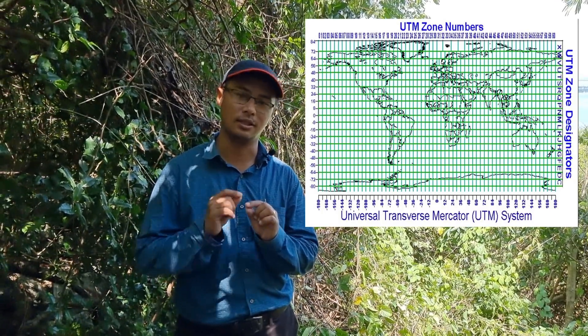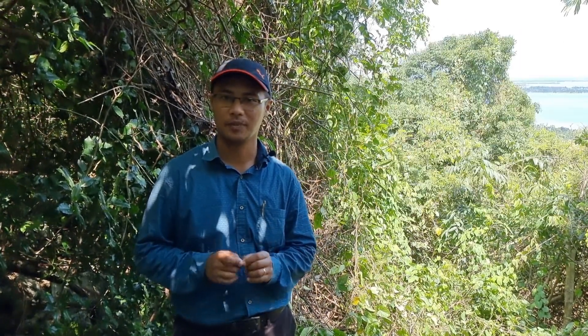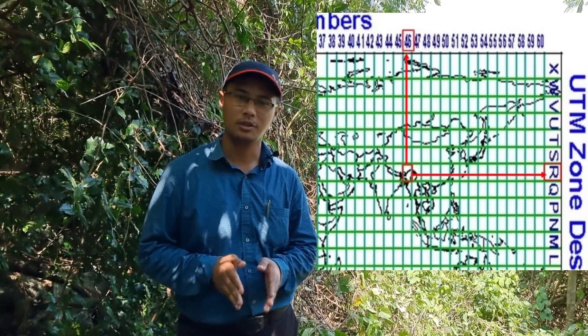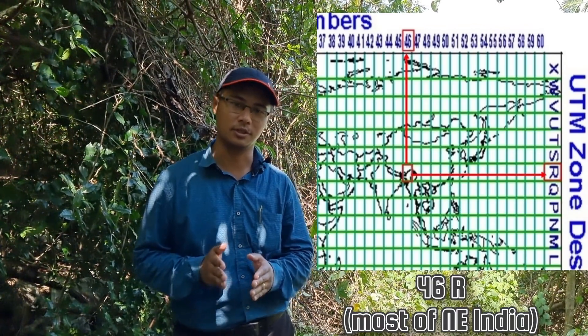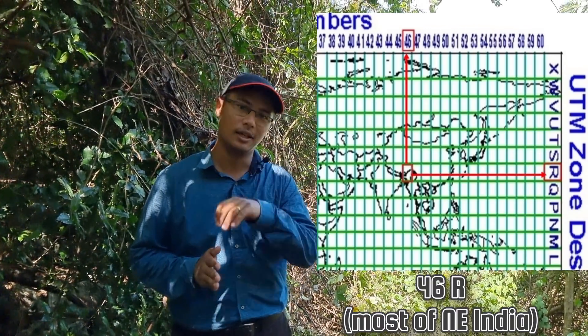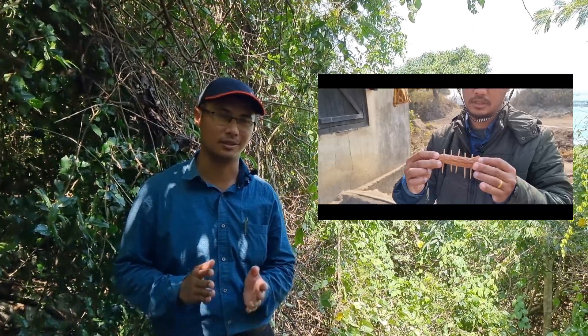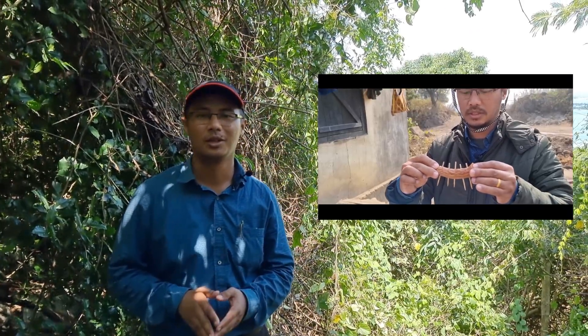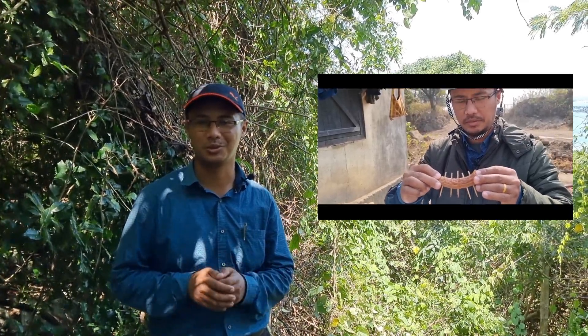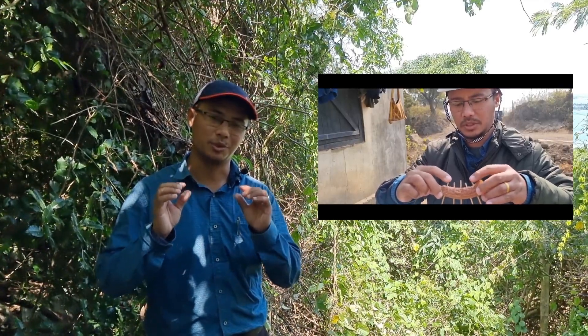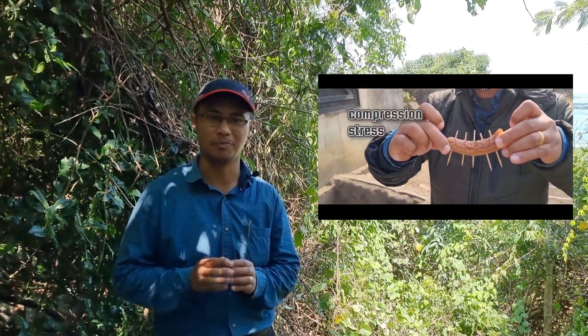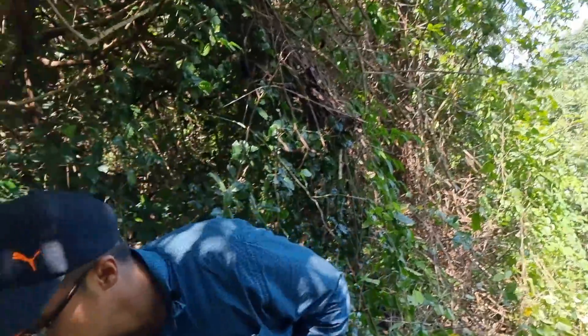This system assumes that the earth is flat in certain places and has been properly divided. For the northeastern part of India, the designation is 46R. I'll give you an analogy, as I did in my video 7 where I used a chicken sausage to demonstrate the bending stresses of a beam. So now I have some fruits with me.